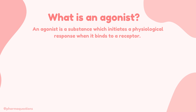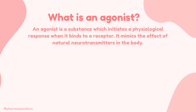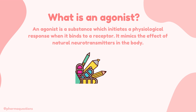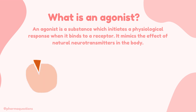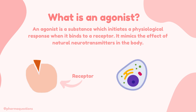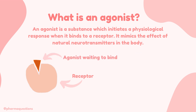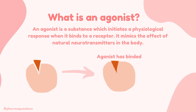An agonist is a substance which initiates a physiological response when it binds to a receptor within the body. Agonists mimic the effect of natural neurotransmitters or chemicals within the body. Here we have a receptor — a protein structure found on or inside a cell which selectively binds to different substances. When an agonist binds to the receptor, the receptor gets activated and triggers a response within the body.